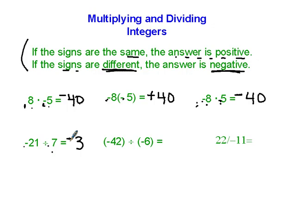42 divided by 6 is 7. Here we have a -42 and a -6, so the answer is positive. You don't have to write a plus sign for positive numbers.